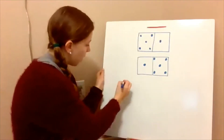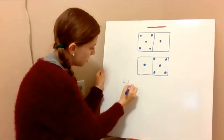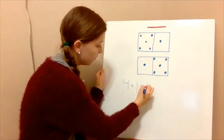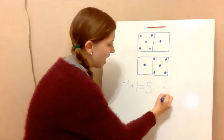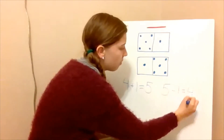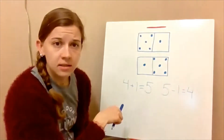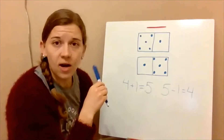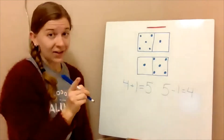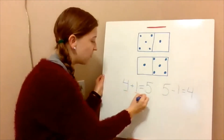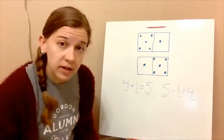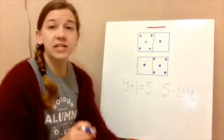How about four plus one equals five, and then five minus one equals four. Are those related facts? Yes, they are. How do we know that they're related? It's because they have the same numbers — they're in different order, but they have the same numbers.